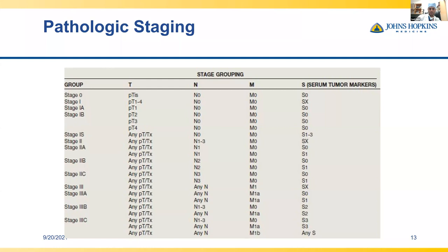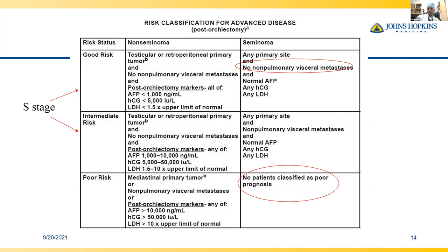The risk classification we routinely use is good risk, intermediate risk, and poor risk. Seminomas don't have any patients classified as poor risk. The difference between good and intermediate risk for seminoma relates to non-pulmonary visceral metastases. For non-seminomatous tumors, good versus intermediate risk differs based on S-stage, while poor risk includes mediastinal metastases or non-pulmonary visceral metastases such as liver or brain.